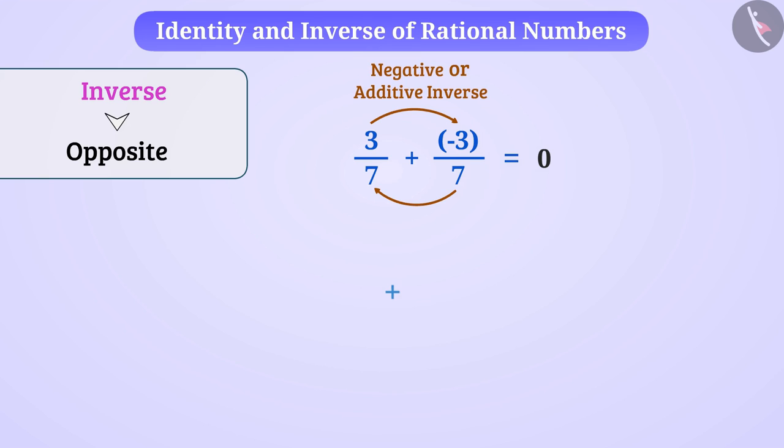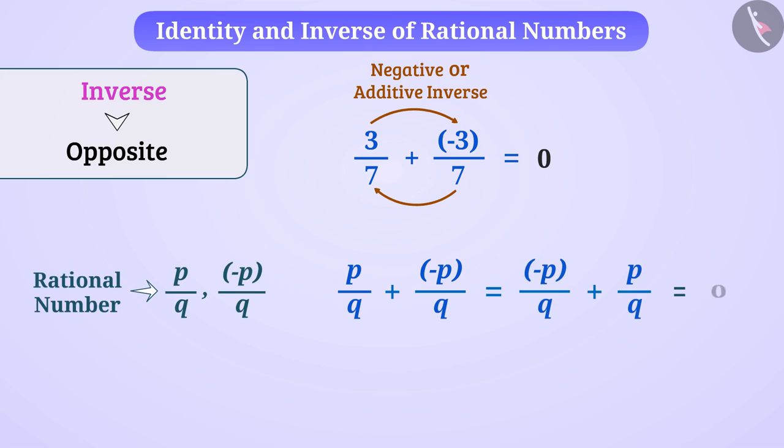To summarize, if addition of any two numbers is 0, then these two numbers are additive inverse of each other. Like here, rational number minus p by q is additive inverse of rational number p by q.